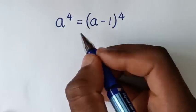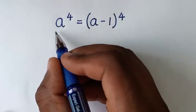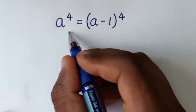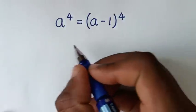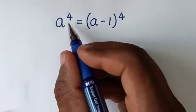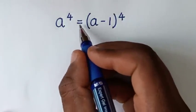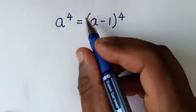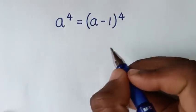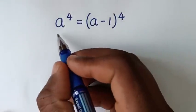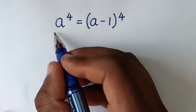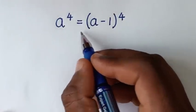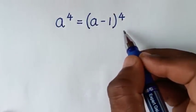Hello, you are welcome to solve this math problem, which is a to the power of 4 is equal to (a minus 1) to the power of 4. We need to find the values of a from this equation.